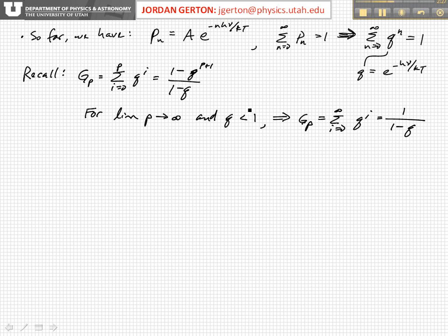Then something less than 1 to an infinite power is going to basically converge to 0. And so we can neglect this term, and we get the infinite series is just, the sum of the infinite series is just 1 over 1 minus Q.